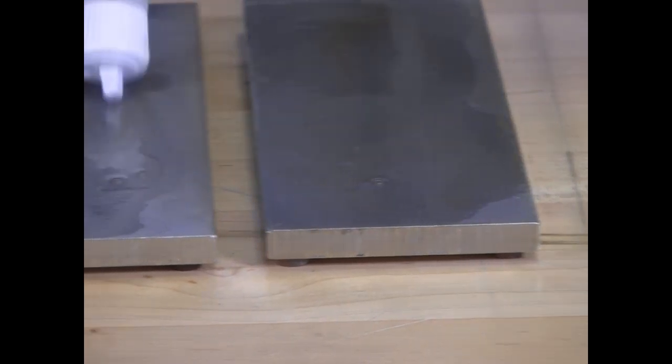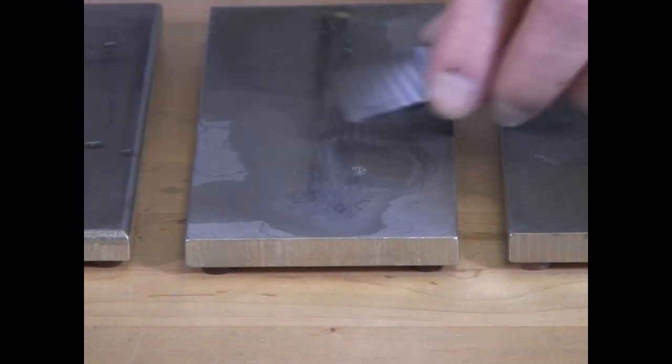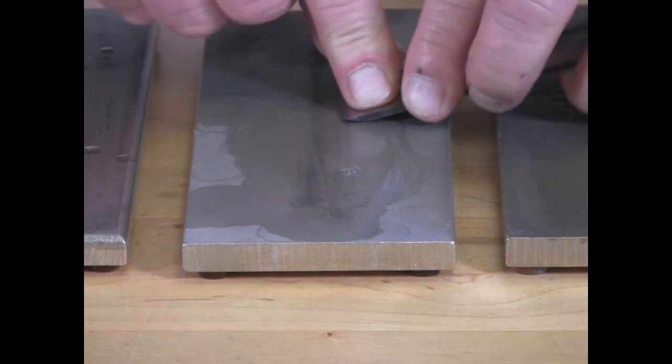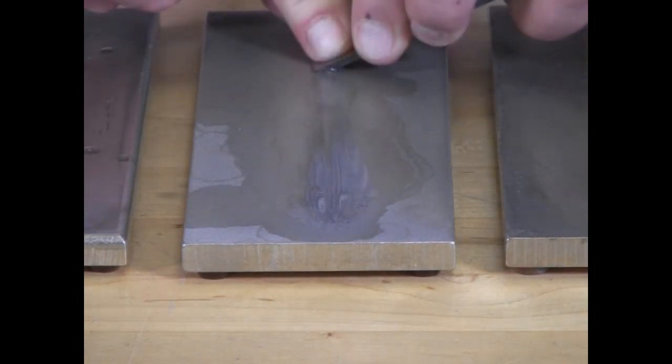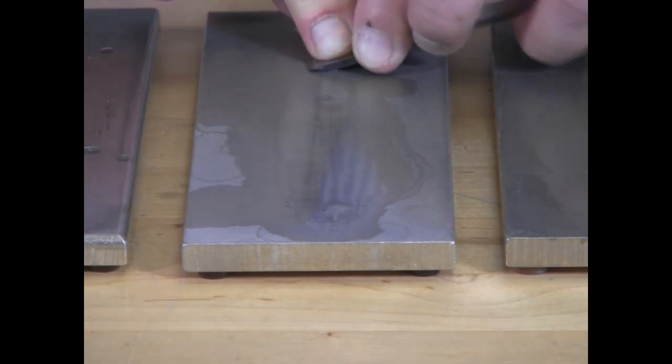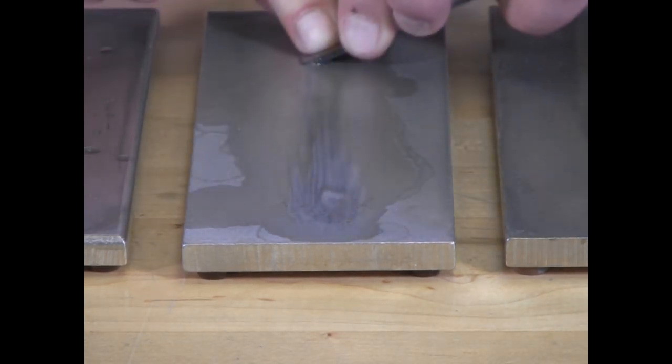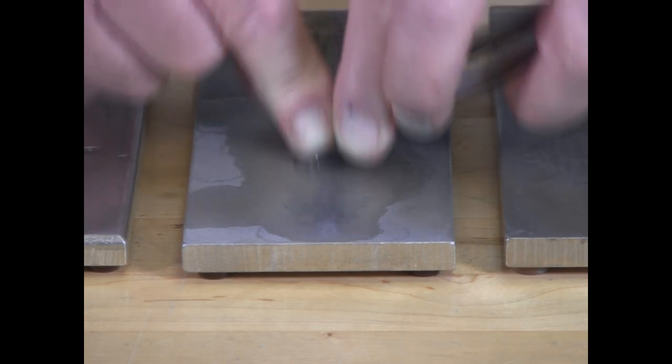Now we'll step to the 600 grit, 25 micron stone. Again, rock back and forth, find that flat bevel. And stop frequently again to reorient, make sure that you're flat and you won't round the bevel.